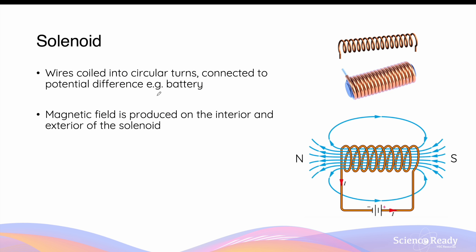Solenoids are a common component you'll come across in electromagnetism. They consist of wires coiled into circular turns, as you can see in the top diagram. These coils of wire are connected to a battery to provide a voltage or potential difference, which causes the current to run through the multiple turns of coiled wire — this is what we call a solenoid. As previously discussed, moving charges or electric current will produce a magnetic field. The current running through the coils produces a magnetic field inside the coils as well as external to the solenoid, as shown in the bottom diagram.